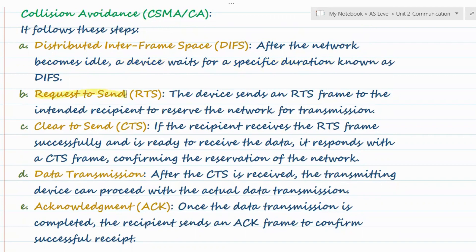Second: Request to Send. The device ready to send transmits an RTS — Request to Send — frame to the intended recipient to reserve the network for transmission. Third: Clear to Send. If the recipient receives the RTS frame indicating a sender is ready for data transmission, and if the recipient is free and ready to receive, it responds with a CTS — Clear to Send — frame.